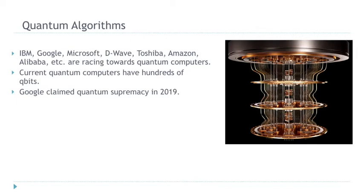These quantum computers are not very strong — they only have hundreds of qubits. But they seem to be strong enough to claim quantum supremacy. What Google claimed a few years ago was that there is a quantum algorithm running on one of its quantum computers that can solve a problem, but the equivalent classical algorithm, if you run it on any supercomputer, would take a long time.